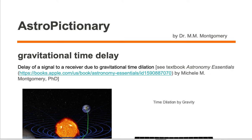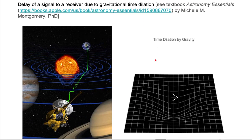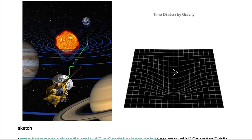Gravitational time delay is the delay of a signal to a receiver due to gravitational time dilation. Let's take a look at an example of gravitational time delay.